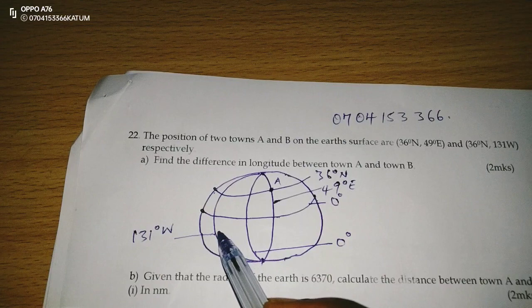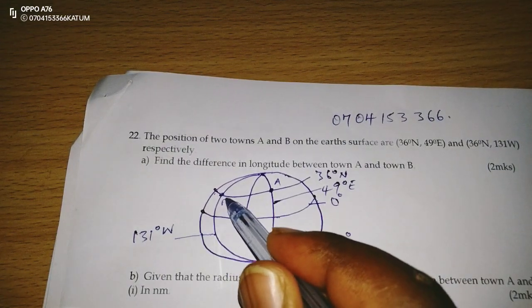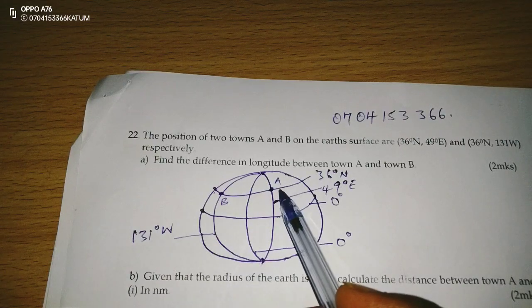So the intersection of 131 in the west and 36 in the north gives us town B. This is town B, this is town A.